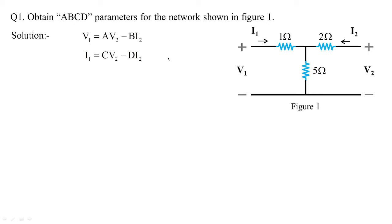We have to obtain the transmission line parameters for the network shown in figure 1 — a simple T-network having 1 ohm, 5 ohms, and 2 ohms arranged in T fashion. We can get the values of A and C when the output port is open-circuited, and we get B and D when the output port is short-circuited.